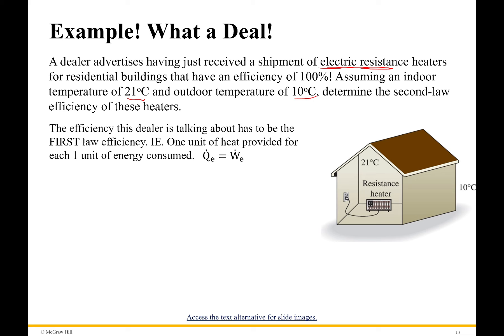For a resistance heater, the best it can do is turn one unit of energy into one unit of heat. Conservation of energy simply says: work goes into the heater, no work goes out of the heater, and its temperature is not changing after startup. So one unit of work turns into one unit of heat.